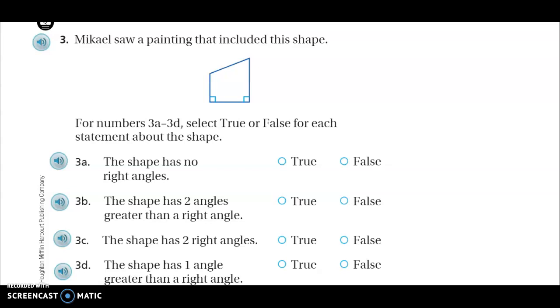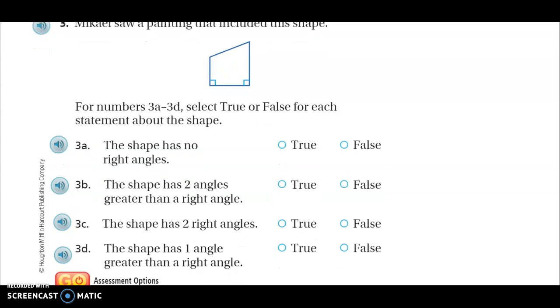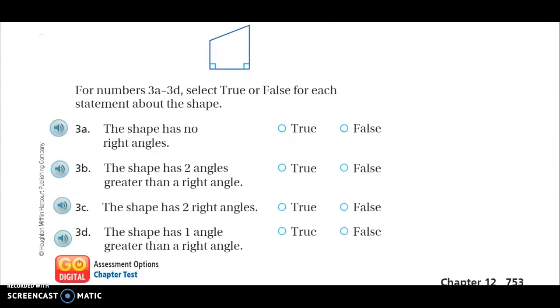Number three. Michael saw a painting that included this shape. So he went to the art museum and this is the shape he saw. For numbers 3A through 3D, select true or false for each statement about the shape. The shape has no right angles. True or false. The shape has two angles greater than a right angle. True or false.